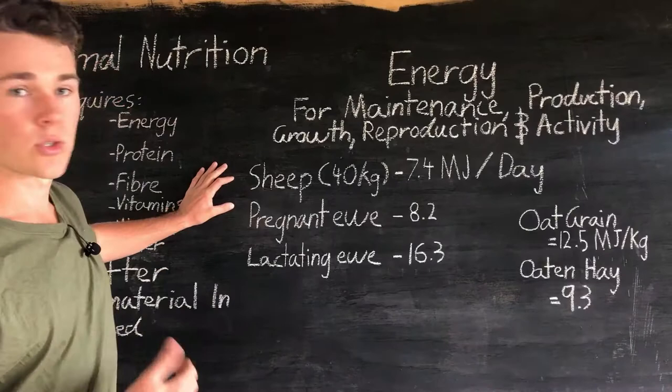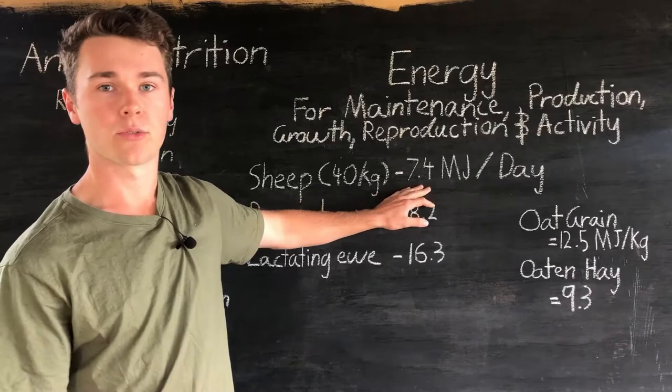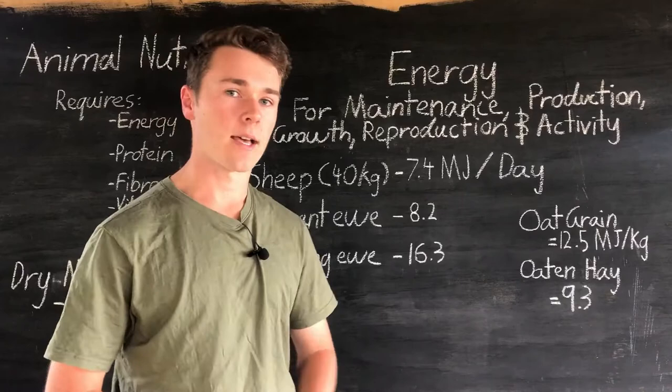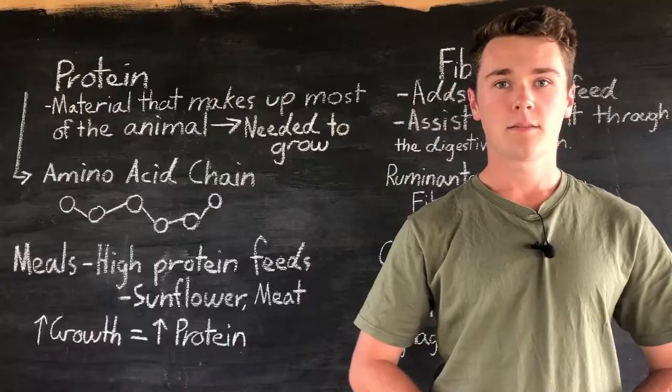Understanding the energy given off by different feeds helps us create different diets for animals. If you want to formulate a diet for your sheep, you have to make sure it's cost-effective and meets the 7.4 megajoules per day. Grain is a great way to provide energy, but we have to be careful because ruminant animals like cows and sheep are not as tolerant to a lot of grain and can get grain poisoning, which can really set them back.